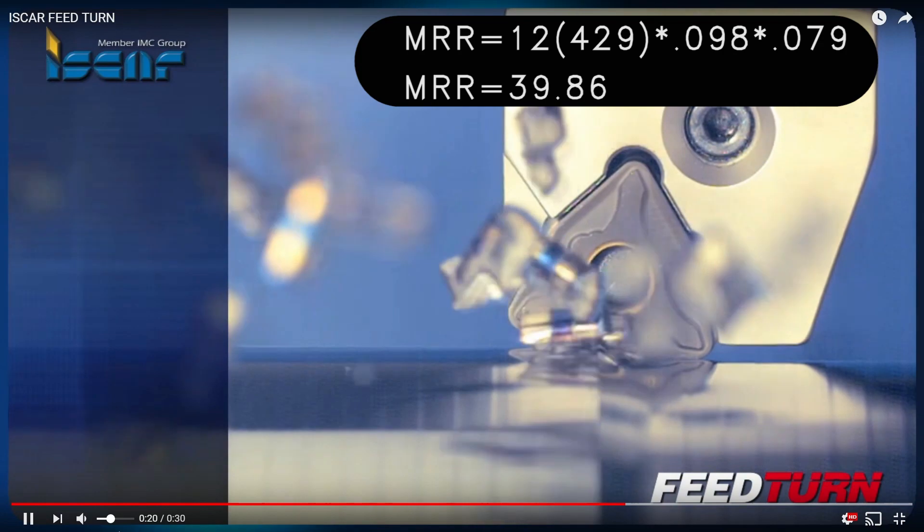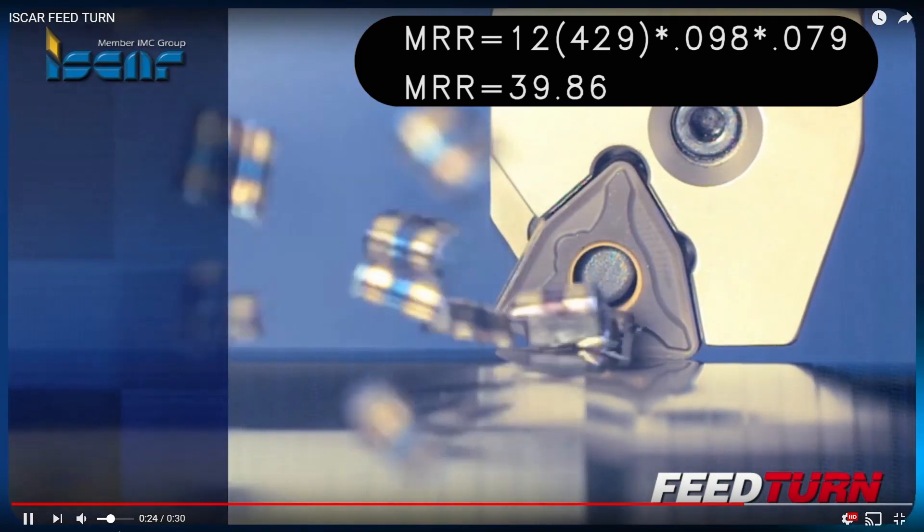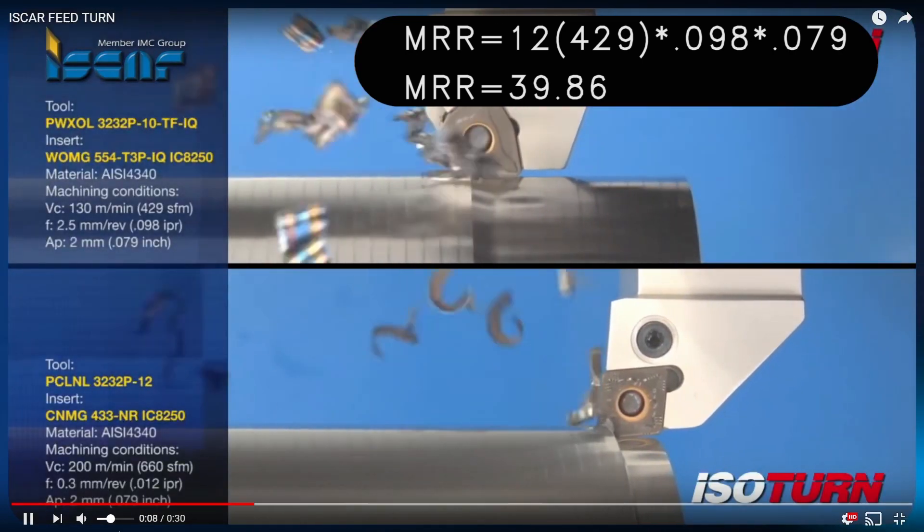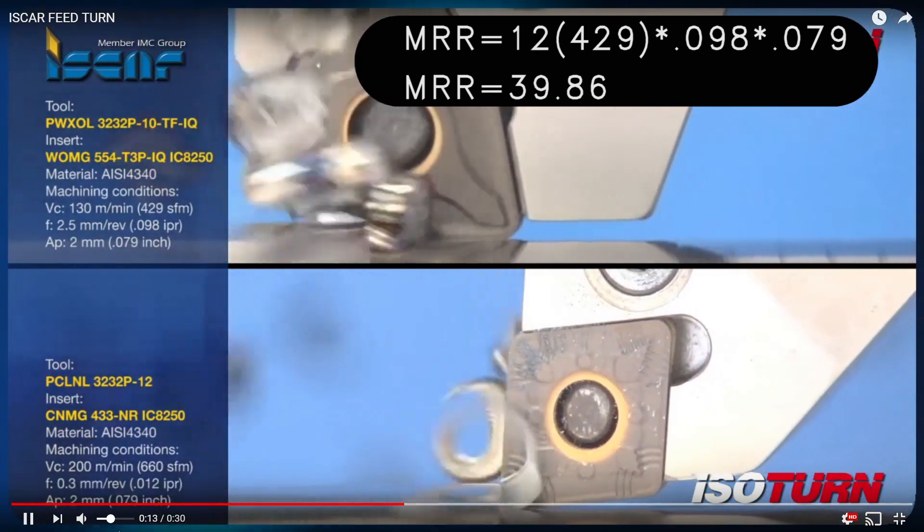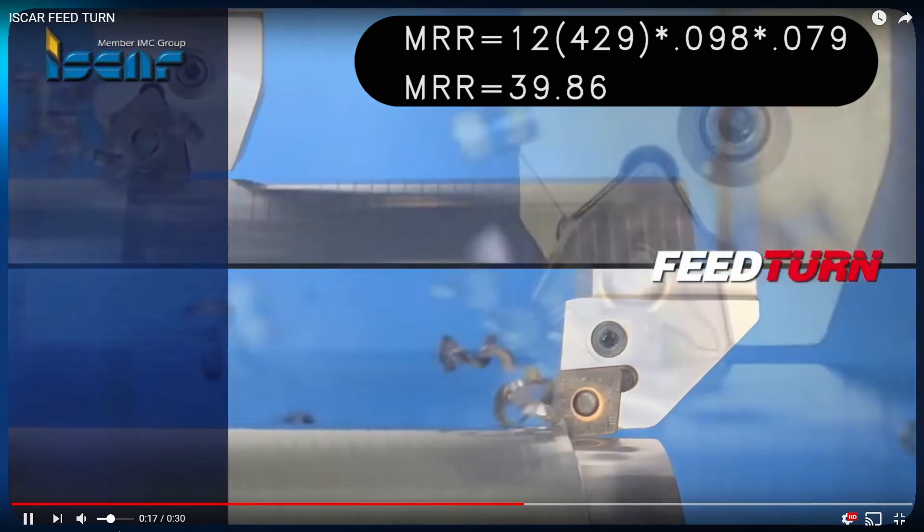So let's just pay attention to this one at the top, which is doing really good. It's at a 39.86, and its depth of cut is around 100 thou, which is pretty good. That's what people typically use.